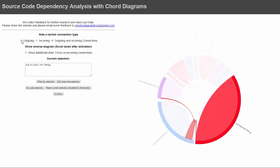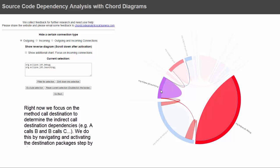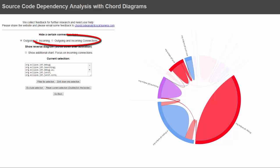Now I select outgoing connections, so I just see the outgoing connections of this package. This means all the packages where I have method calls to the other package get highlighted. You can see the call graph by activating step by step where the method calls go to — I click all the packages and then you see which package gets called by those.